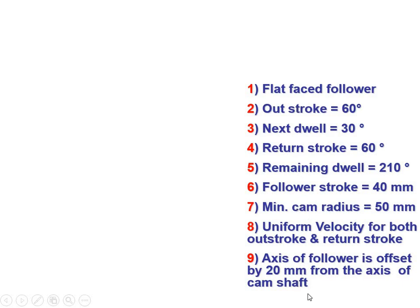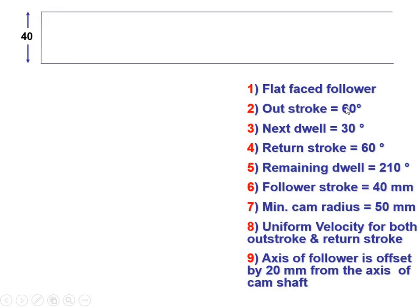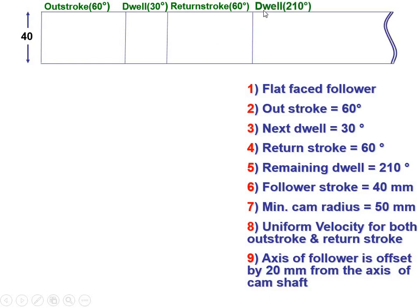Now let's start with the displacement diagram. Draw the horizontal line — the length can be taken randomly. Then draw the vertical line as the stroke length, which is 40 mm. Start with the out-stroke of 60 degrees; take the scale as 1 cm equals 10 degrees, so the length of the out-stroke is 6 cm. The dwell period of 30 degrees is 3 cm. The return stroke of 60 degrees is 6 cm. The remaining dwell is 360 minus 60, 30, and 60, giving 210 degrees — 21 cm by scale, so use the break symbol.